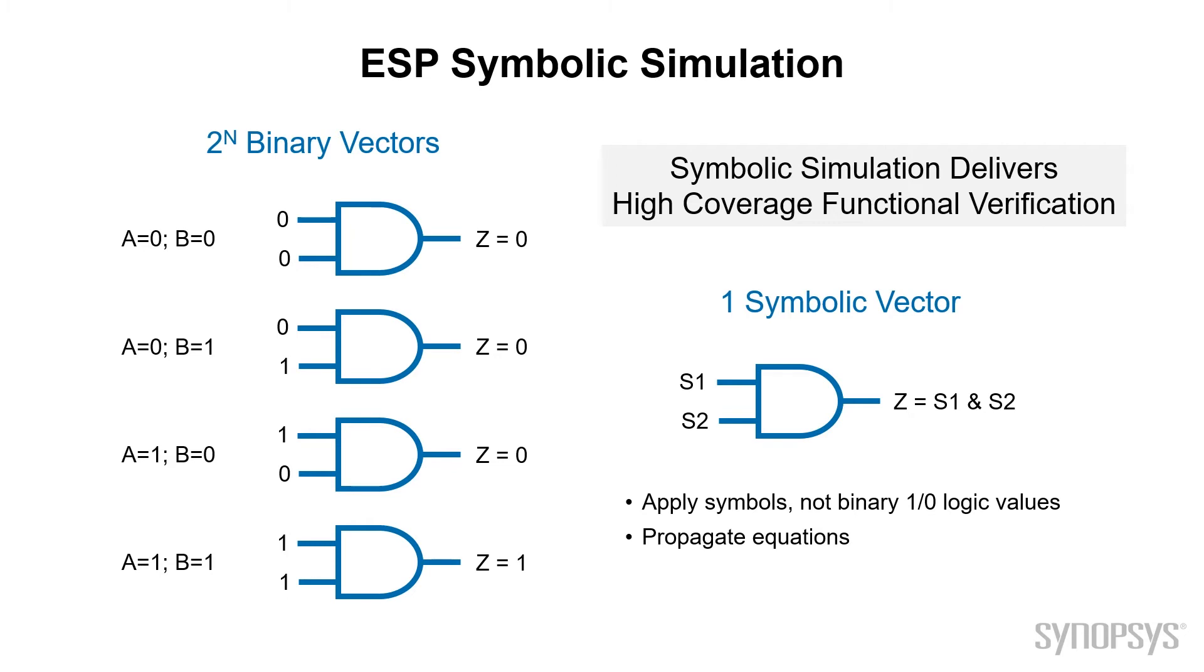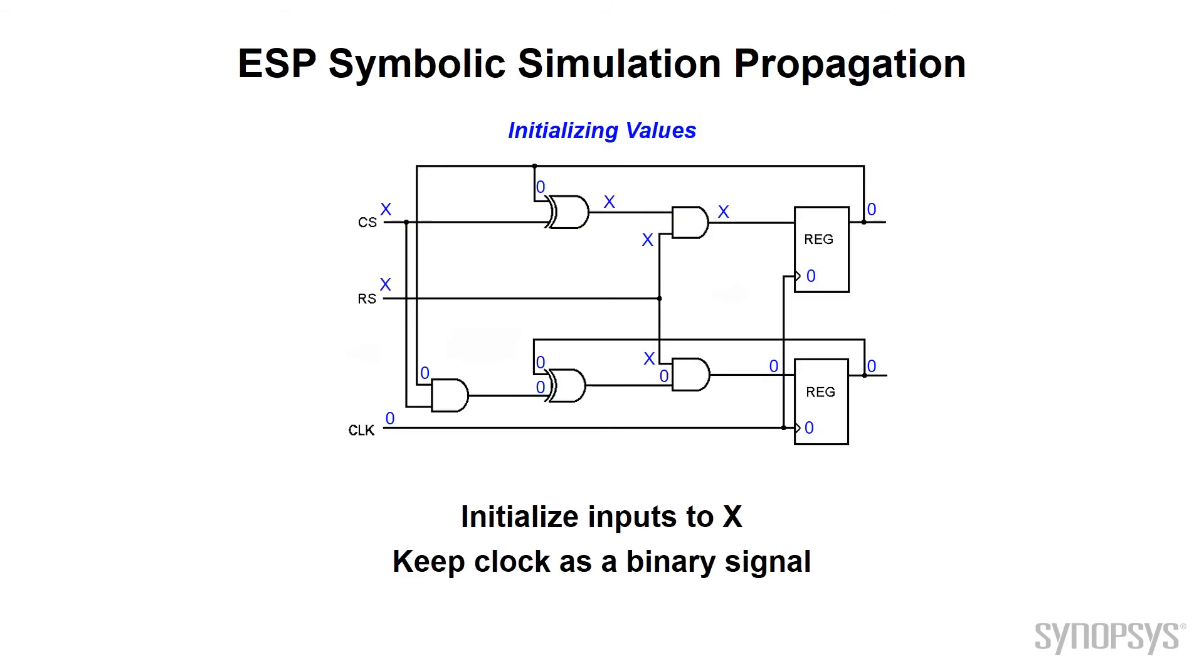Let's look at a simple design with two registers and some logic. Here's our simple design with the initial state before any symbolic simulation is started. This is an example design where we have forced the internal registers to 0 at the start of simulation. We also set the inputs to X or unknown. We will keep the clock as a binary value. For a design this simple, we could let the clock be symbolic. But in a typical design, you do not use a symbolic clock in order to simplify the verification and reduce the amount of time required to run the simulation.